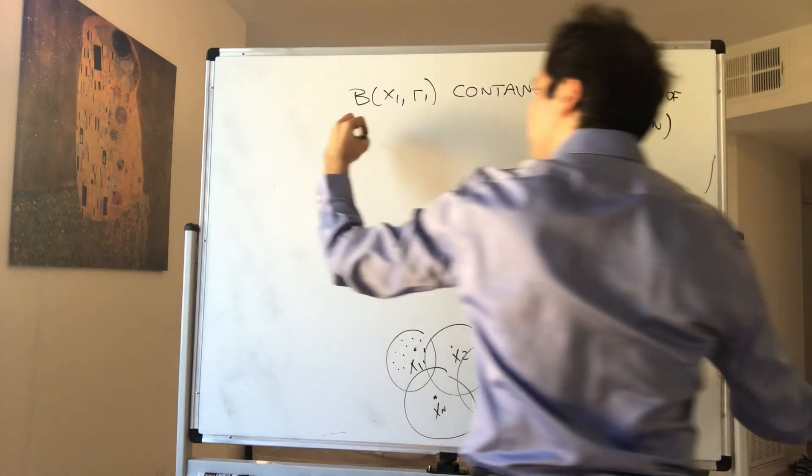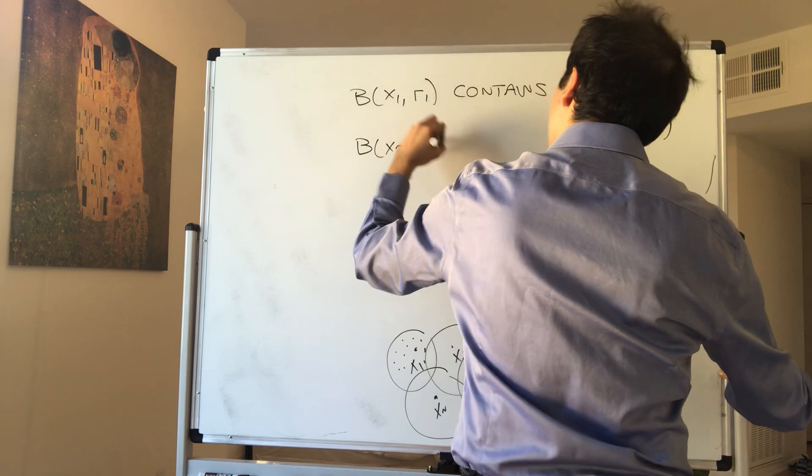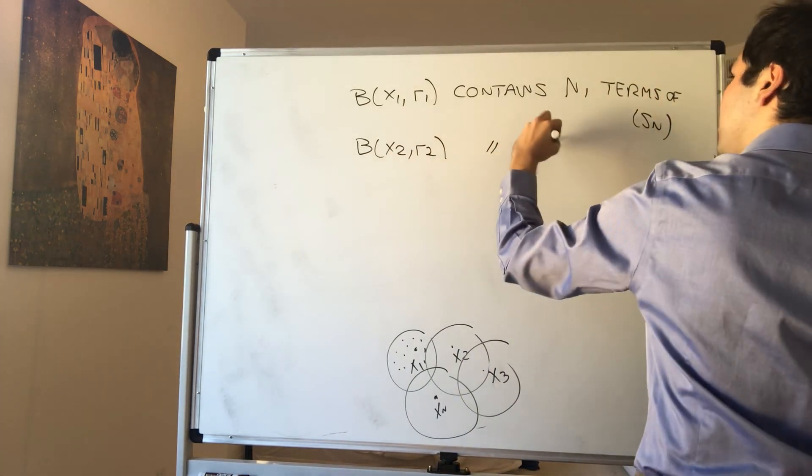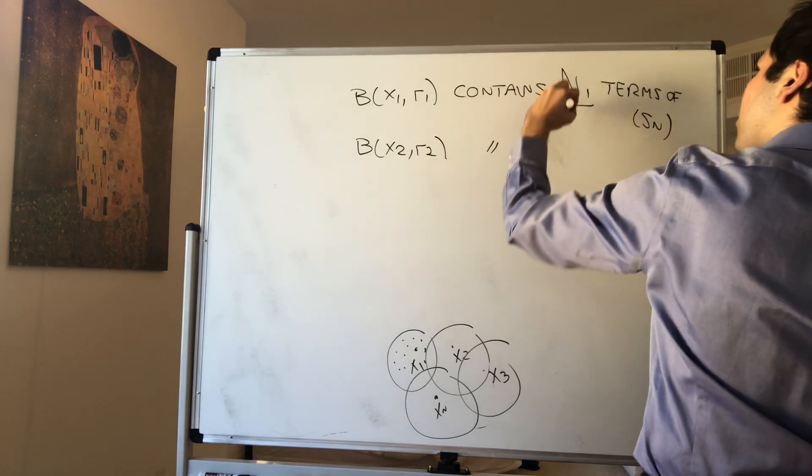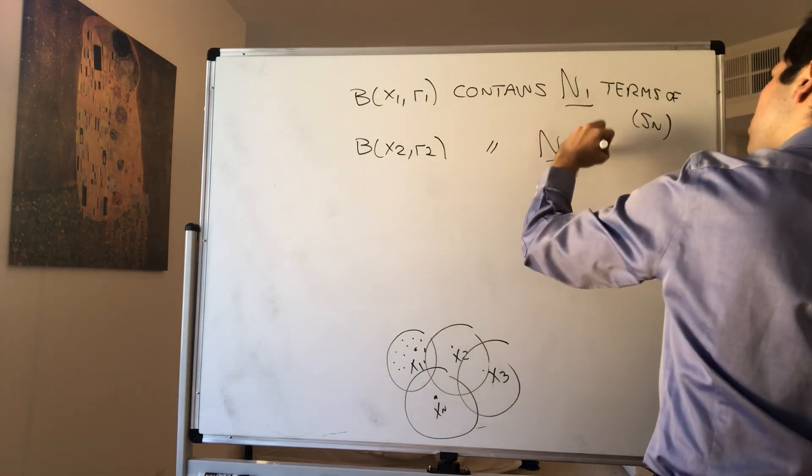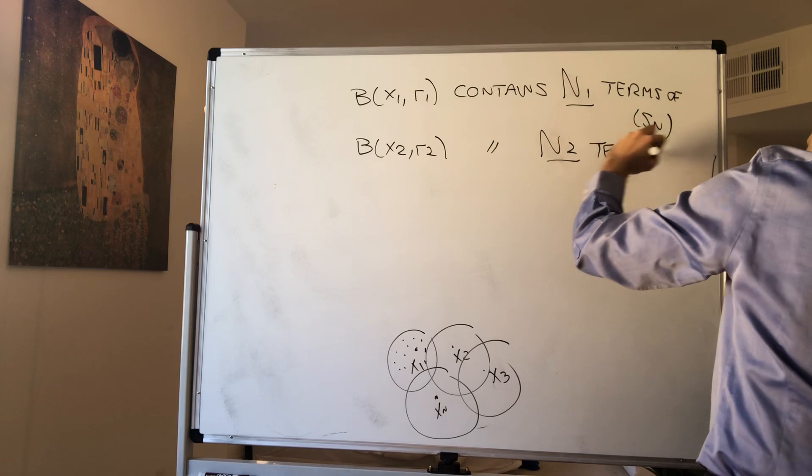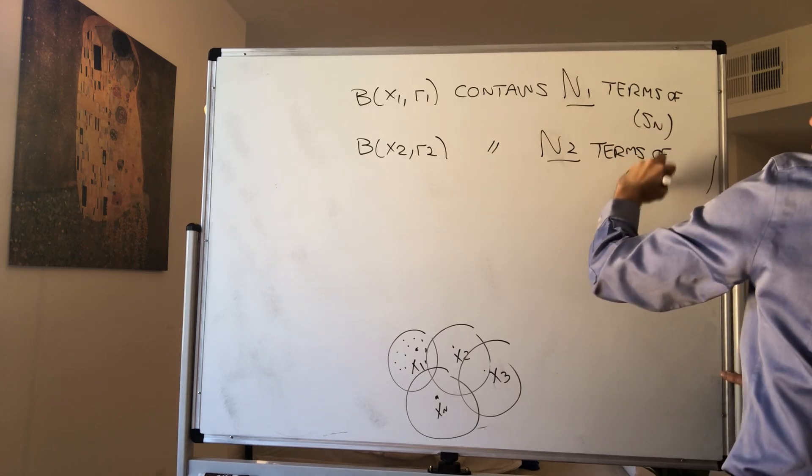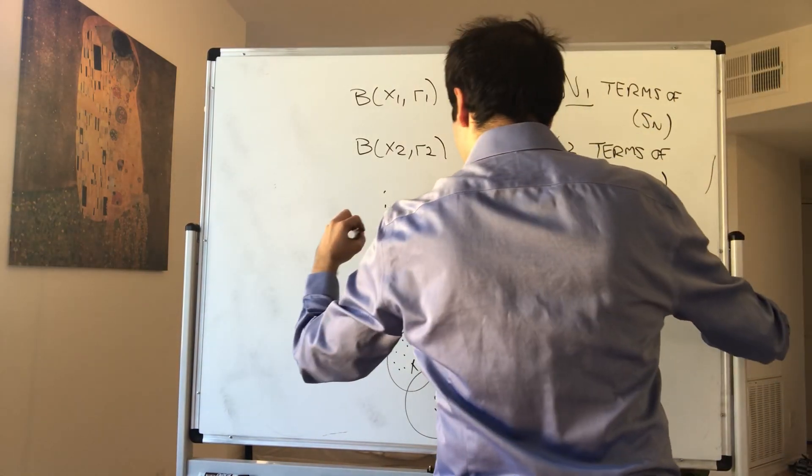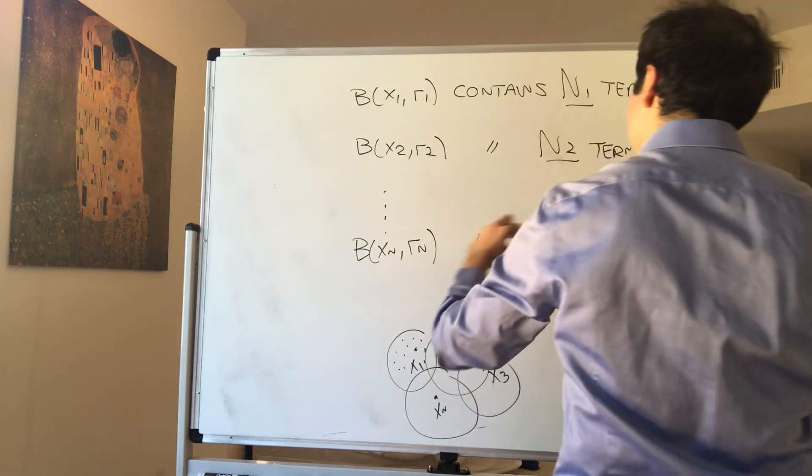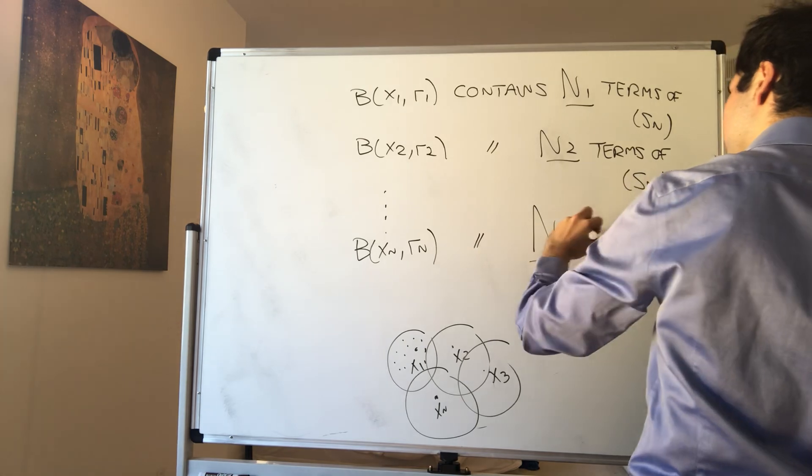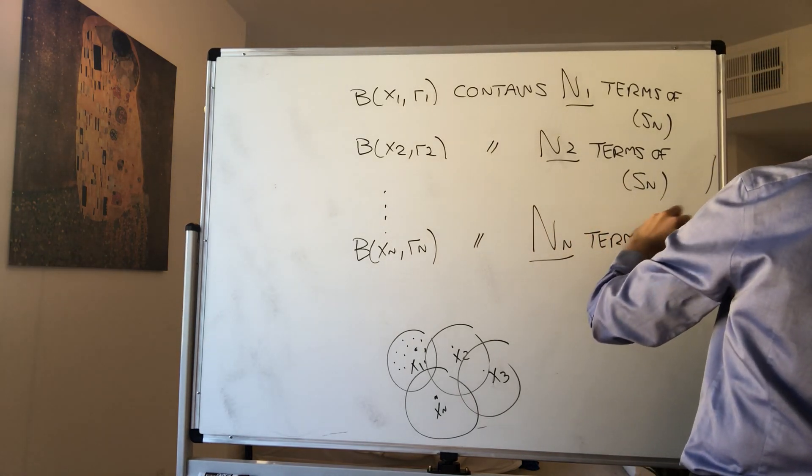And then B(X2,R2) contains, let's call it N2 terms. Again, it's all capital. So capital N1 terms, capital N2 terms of Sn, etc., etc., etc., up to B(XN,RN) contains NN terms of Sn.